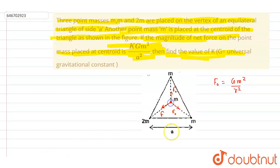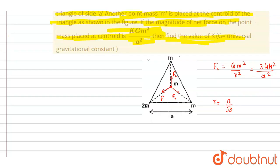If you see, this is a triangle of side length a, so here the centroid distance will be equal to a by root 3, right? So you can just put the r value as a by root 3, so it will be 3Gm²/a².